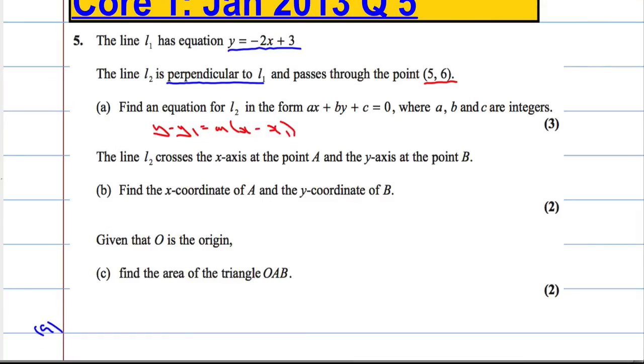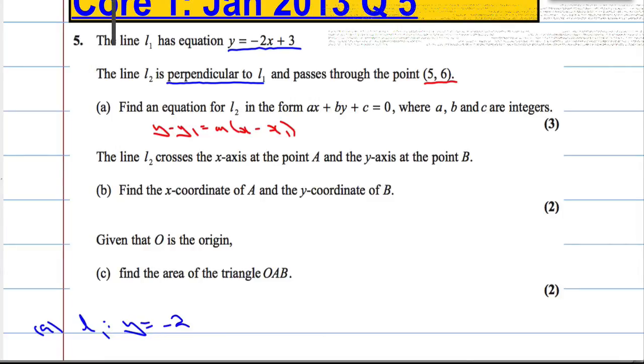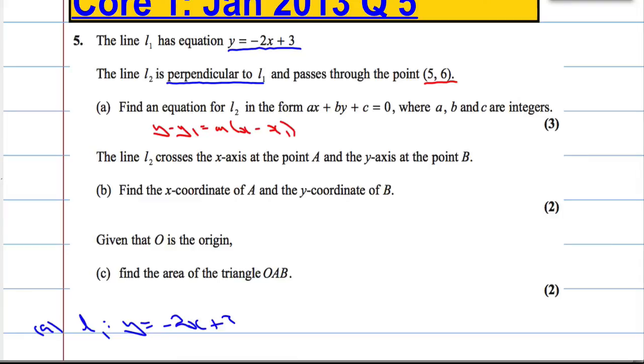So, part A. L1 is the line y equals negative 2x plus 3. That implies that the gradient of that line, I'll call it M1, is equal to negative 2. We're just using y equals mx plus c.